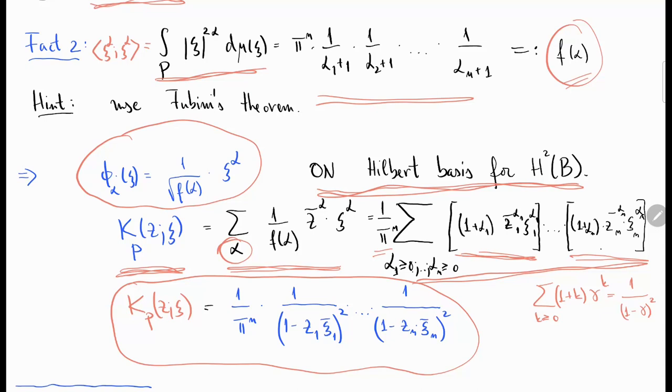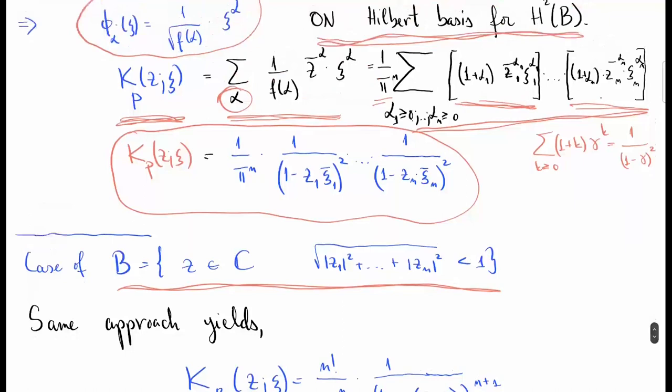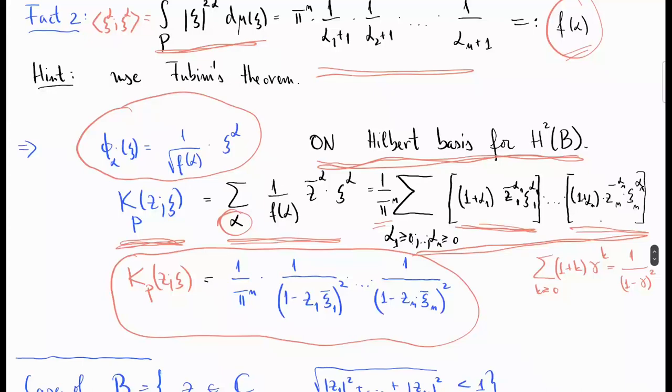This is the formula for the Bergman kernel of the polydisc, really really explicit. You can do the same game in case of the ball, the Euclidean ball. It turns out that the orthonormal Hilbert basis in this case is very similar. You can work with monomials as well, they will always be orthogonal to each other. Unfortunately you will have to choose a different normalization, so this will not be the length of monomials anymore. You will get a more complicated expression but again involving gamma functions and whatnot.